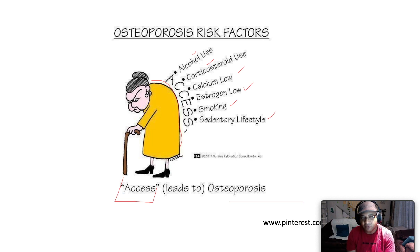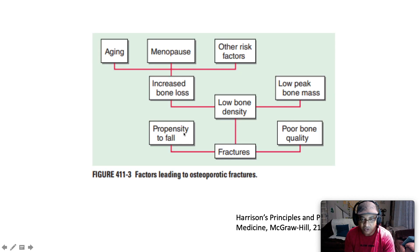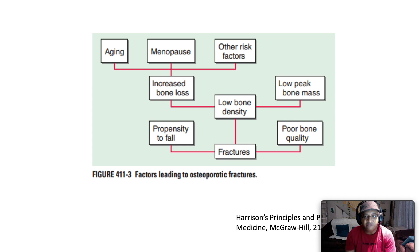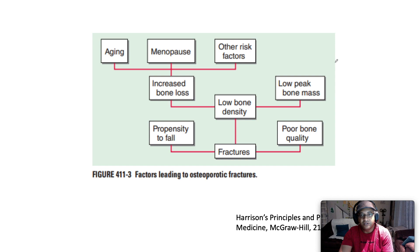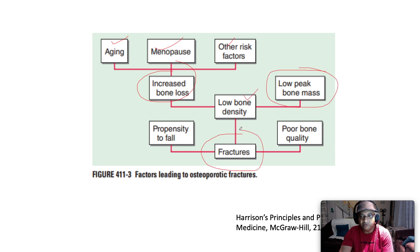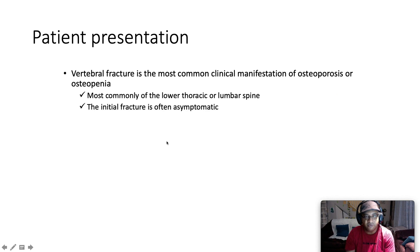Note the dowager's hump, which speaks to thoracic kyphosis due to loss of vertebral height — what happens in osteoporotic patients. We always suspect vertebral fracture if a patient has that typical posture. Aging, menopause, and other factors lead to increased bone loss, which combined with low peak bone mass contributes to low bone density and increased chance of fractures.